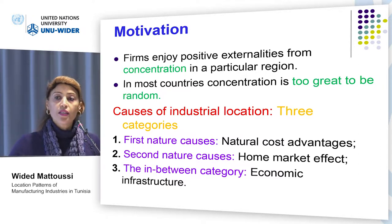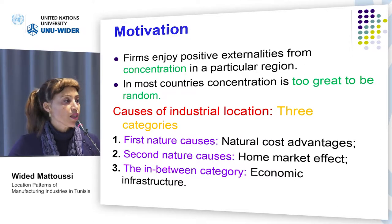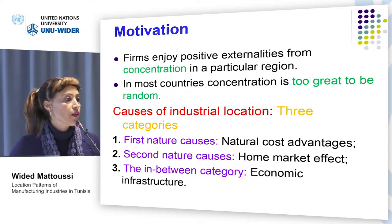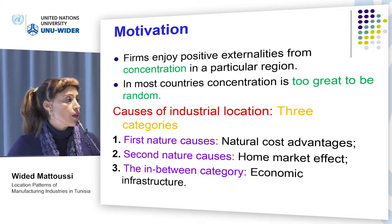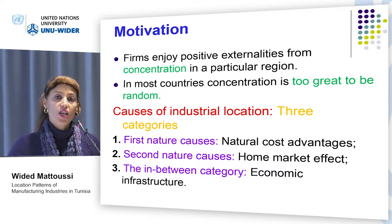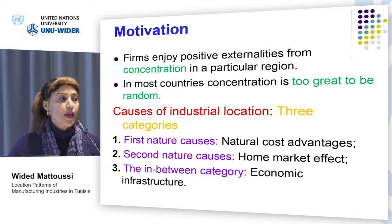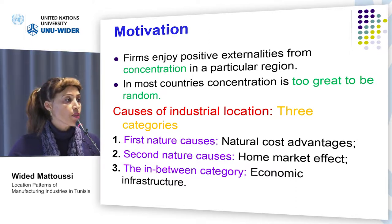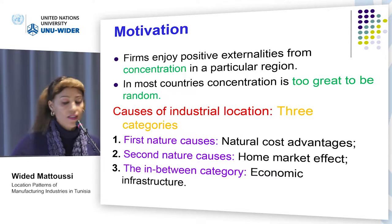The third category, the in-between category, is what might be called economic infrastructure. They include local public goods such as transport networks and factor endowments such as industry-specific skills.